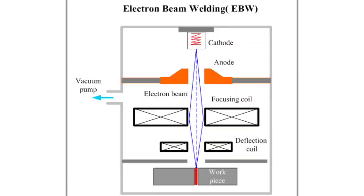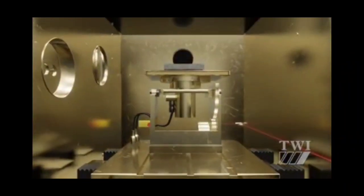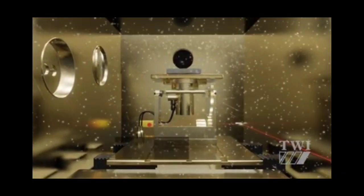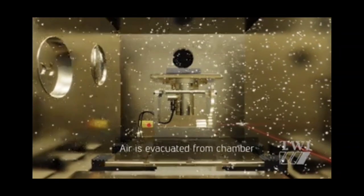Electron beam welding is a welding process utilizing heat generated by a beam of high energy electrons. The electrons strike the workpiece and their kinetic energy converts into thermal energy, heating the metal so that the edges of the workpiece are fused and joined together, forming a weld after solidification.